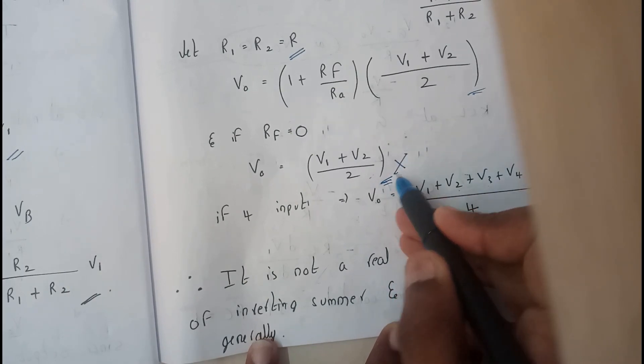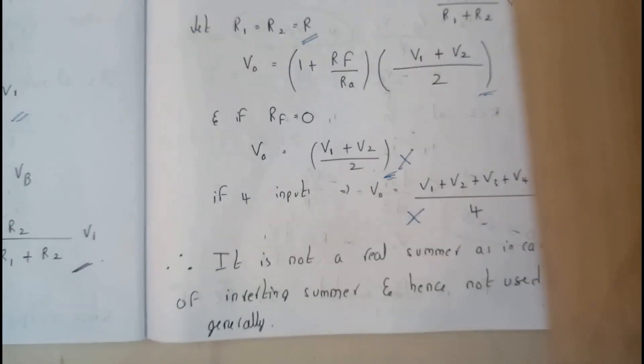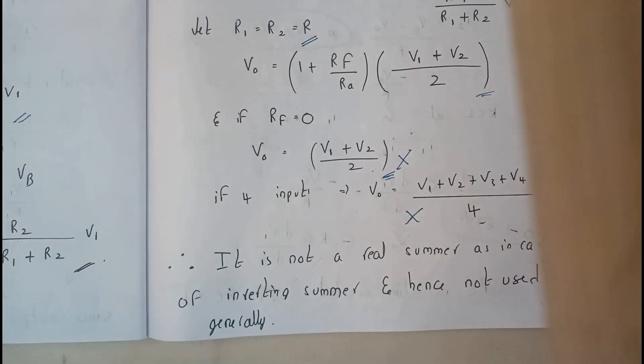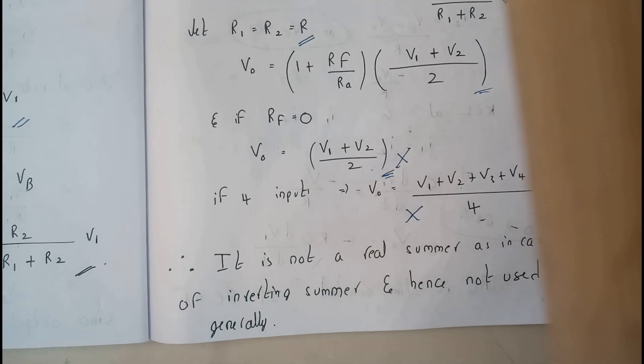Addition means nothing but we gonna add V1 plus V2. Why are we dividing with the number of terms? That's not correct. If we do that we gonna get the average value of those all. So basically non-inverting summing amplifier is not a proper summing amplifier.